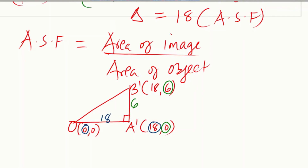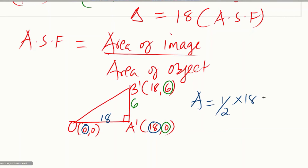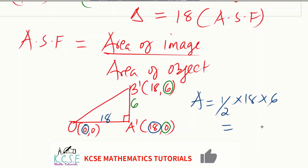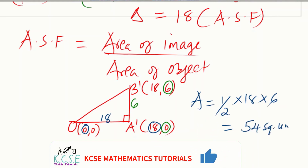Since we have the base and the height of the image triangle, we can calculate its area. The area of triangle OA'B' equals half multiplied by the base (18) multiplied by the height (6), which gives 54 square units.